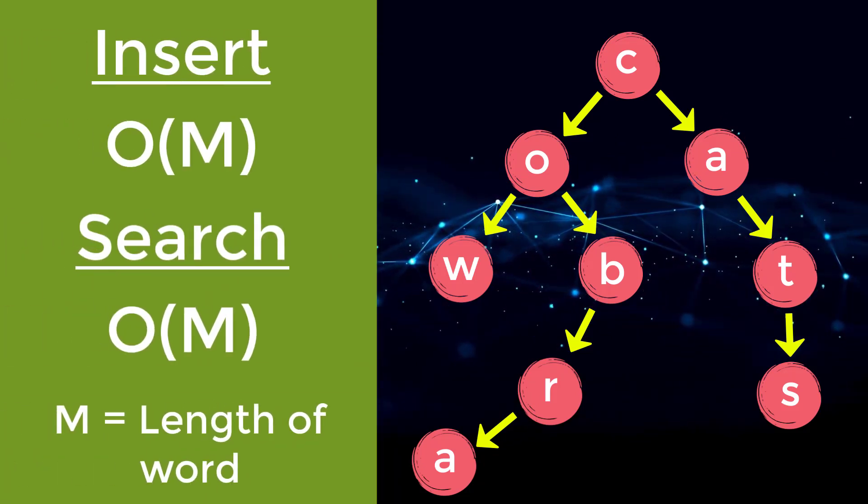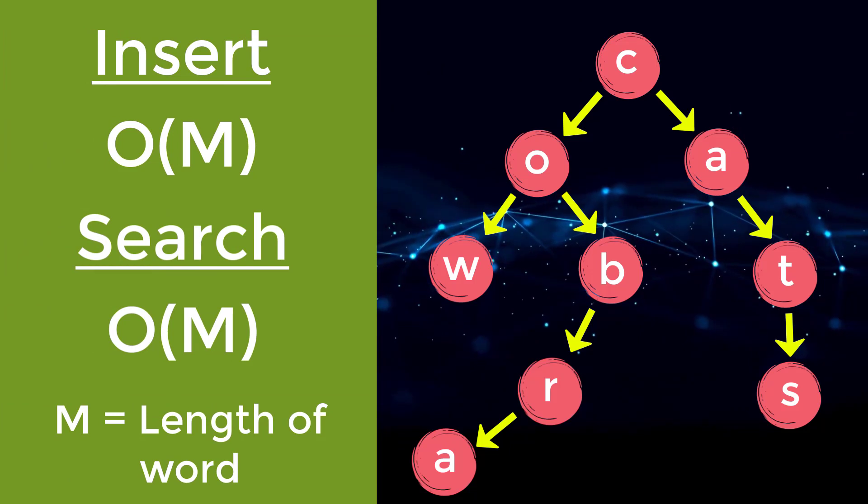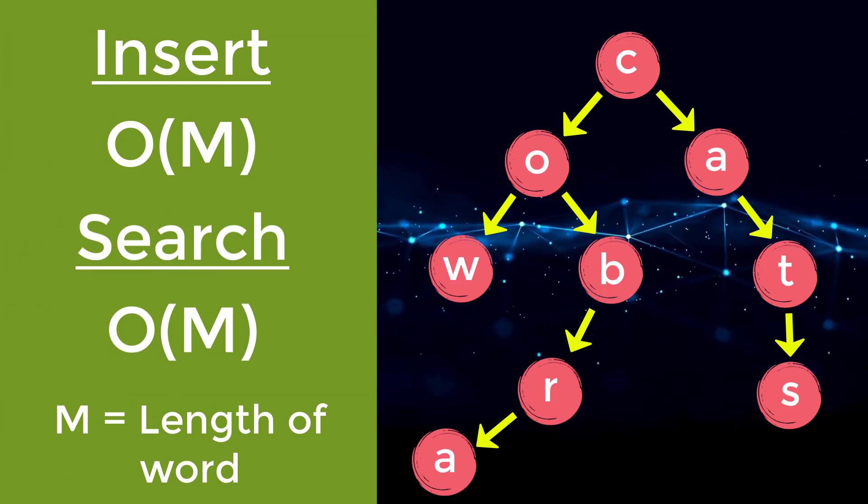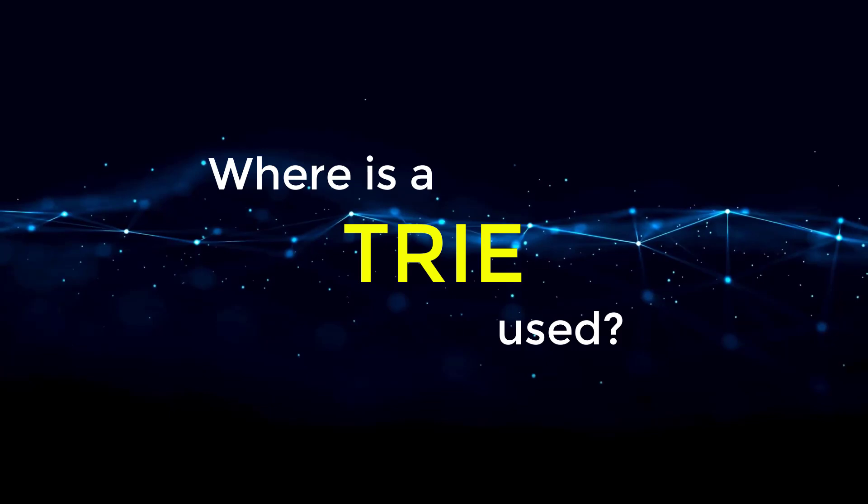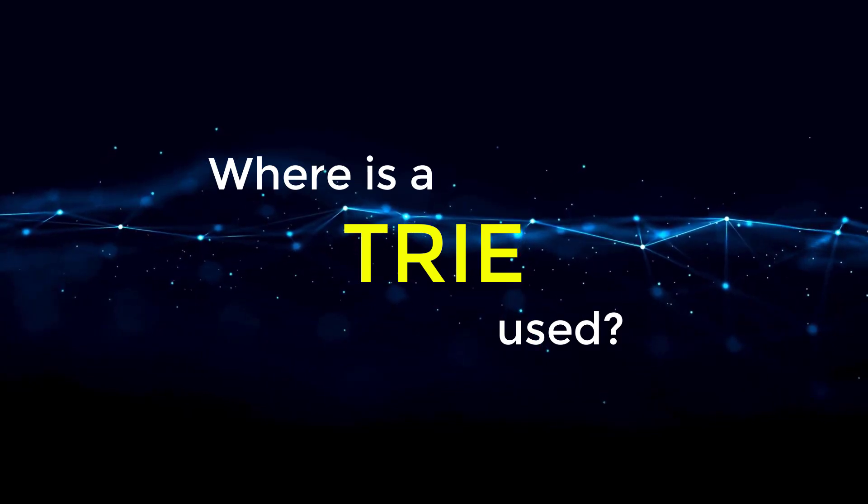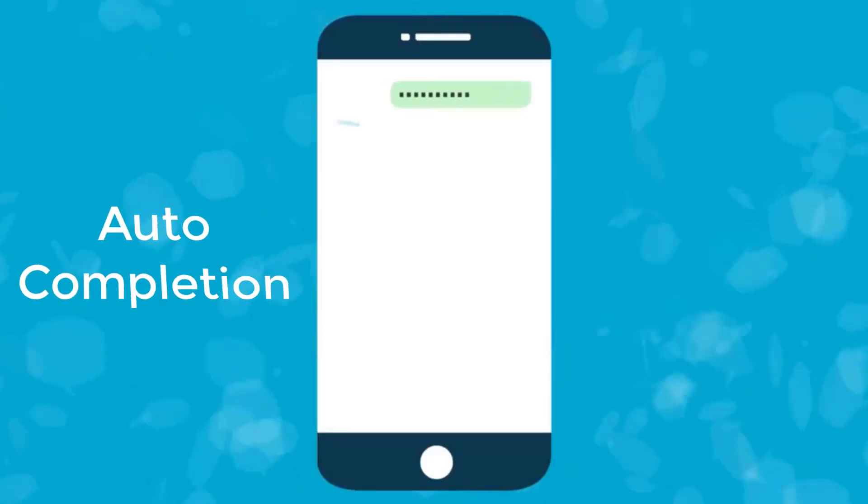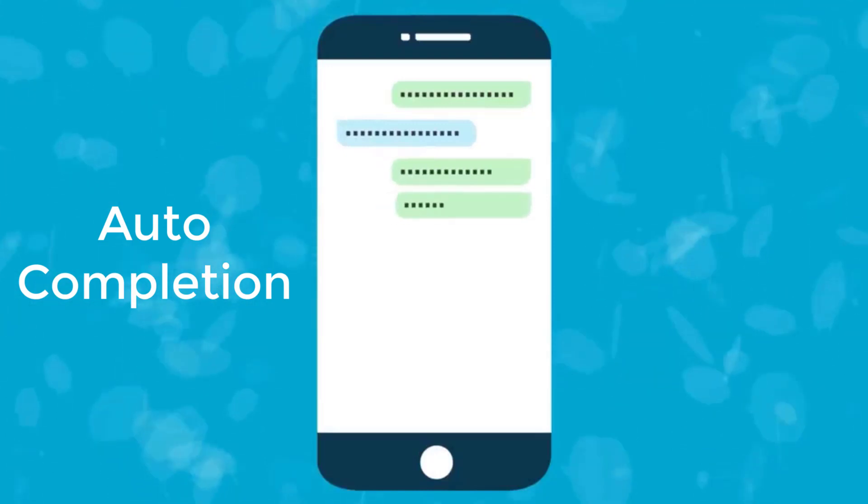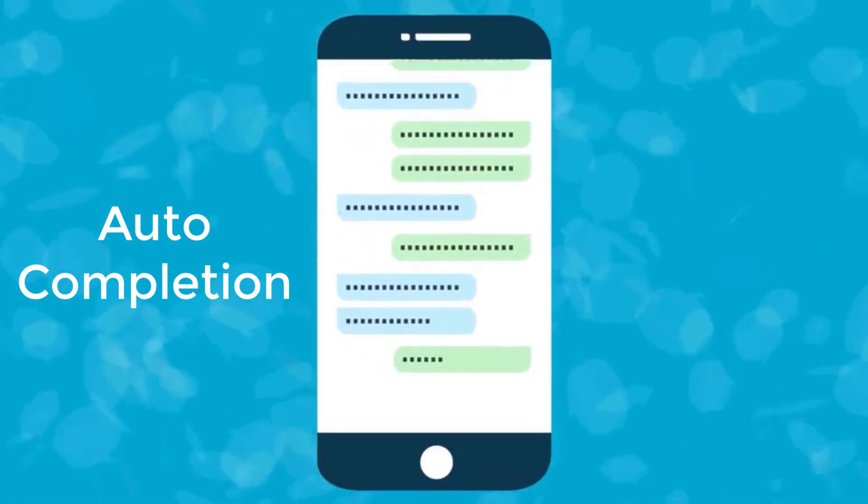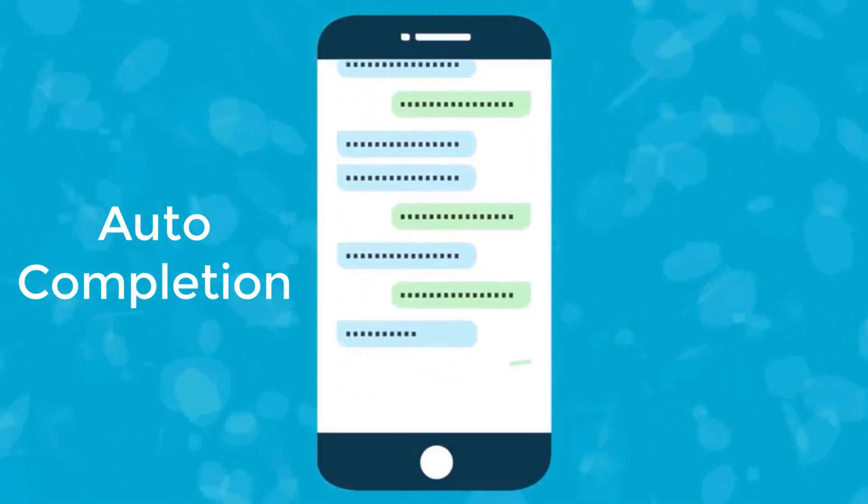So both inserting words and searching for words is an O of M operation, where M is the length of the word. So where is this trie data structure normally used? The most common case is for auto-completion. If you're typing into your phone and doing a text message, you can have different options that pop up to get as close to what you're trying to type.